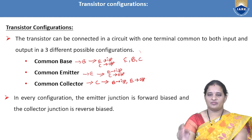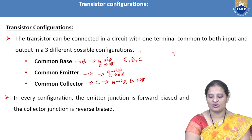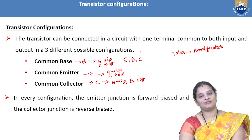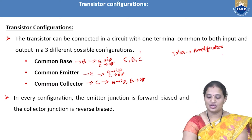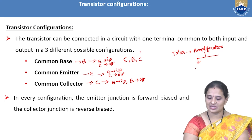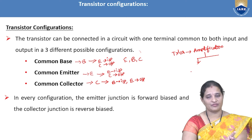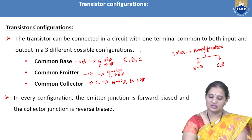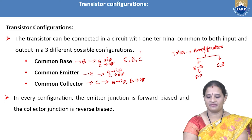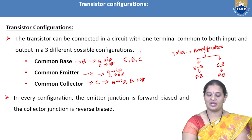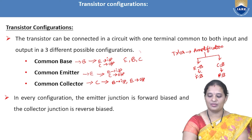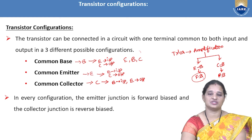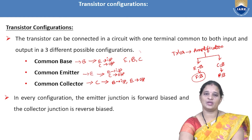Whatever the configuration, the major application of a transistor is amplification — increasing the strength of a weak signal. To use the transistor as an amplifier, the emitter-to-base junction must be forward biased and the collector-to-base junction must be reverse biased. When this biasing is applied, the transistor can perform the amplification operation.